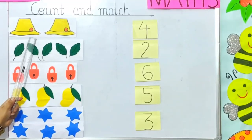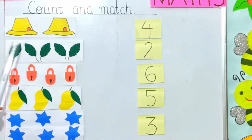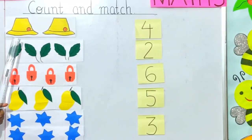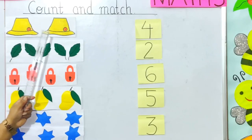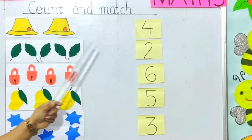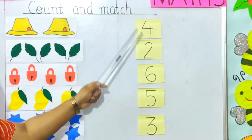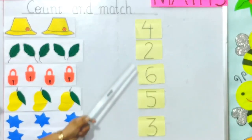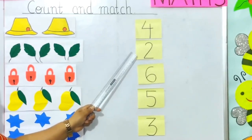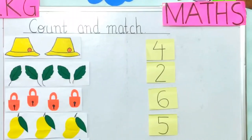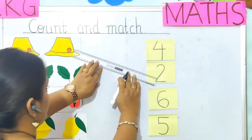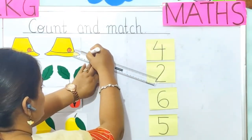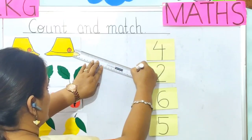What picture is this, children? Hats. Let's count how many hats there are: 1, 2. Where is the number 2 here, children? Yes, it is here. So we will match it with this — we will make a straight line.